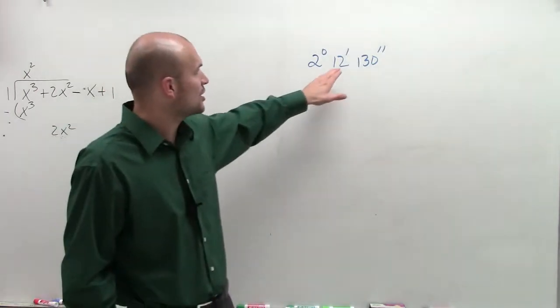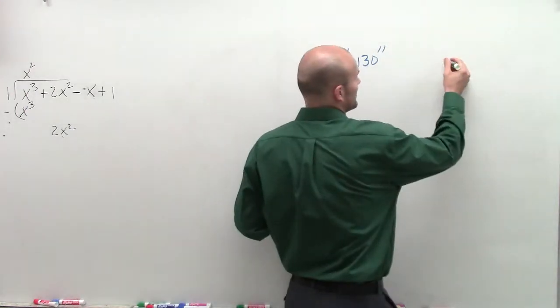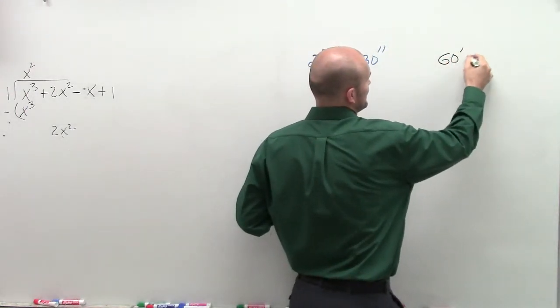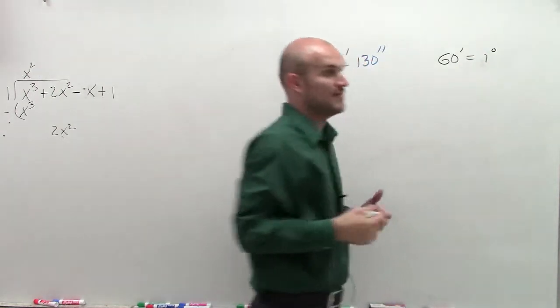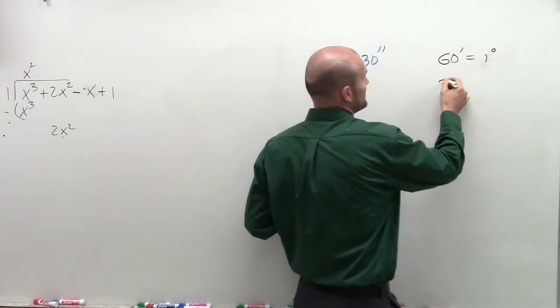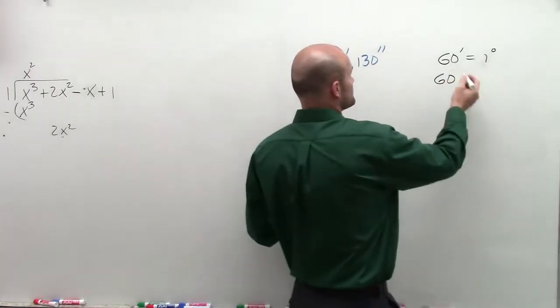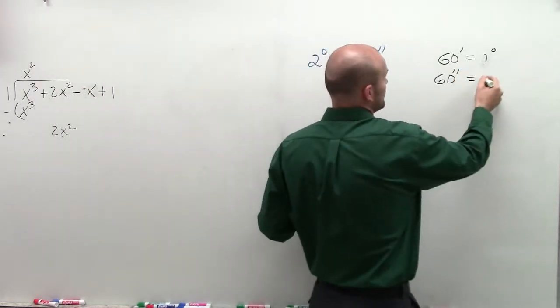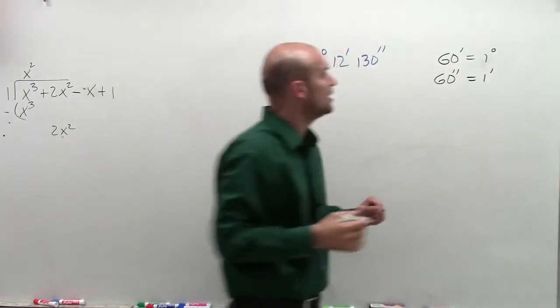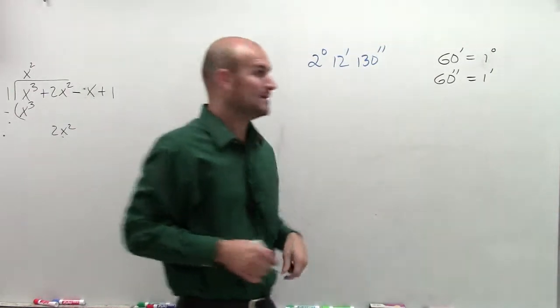As there are 60 minutes in one degree. So what I can write is 60 minutes equals, I don't know why I wrote it like that, one degree. Then we could say there's going to be, for every, if there's 60 minutes in one degree, then there's going to be 60 seconds are equal to one minute. So 60 minutes equals one degree, 60 seconds equals one minute.